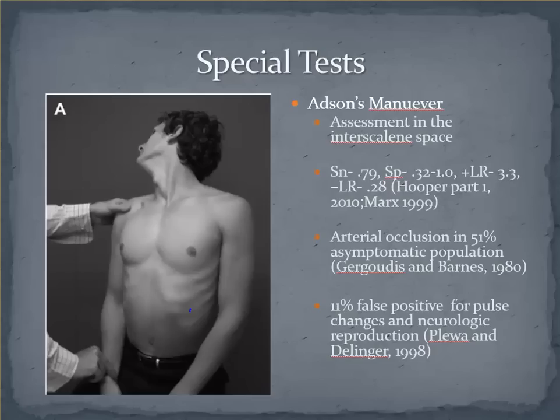The Adson's maneuver is one of the most classically described tests, where the patient is rotating and extending their cervical spine toward the site of symptoms while the examiner assesses for pulse change or reproduction of symptoms. You will often also see the arm extended and laterally rotated slightly while holding a breath. One of the problems you will see is the inconsistency in which the tests are performed. Alone, the specificity is just shy of 0.8 with a modest negative likelihood ratio. In a study by Gergoudis and Barnes, arterial occlusion occurred in more than half of the asymptomatics tested. Plua and Dellinger noted about an 11% false positive rate for both pulse changes and neurologic reproduction.